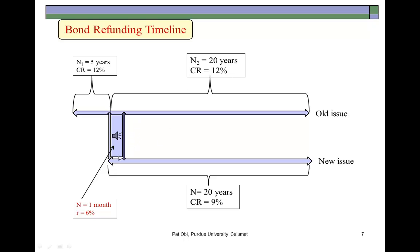Today, this company is considering replacing the old issue with a new bond issue. Interest rates have dropped to 9%, so if the company were to reissue these bonds right now, they would be selling $60 million worth of new bonds at an annual rate of 9% for 20 years.